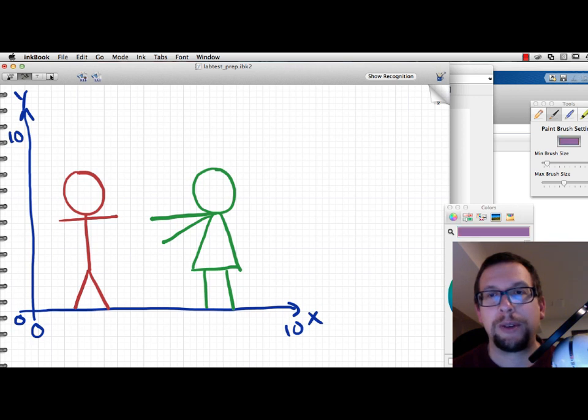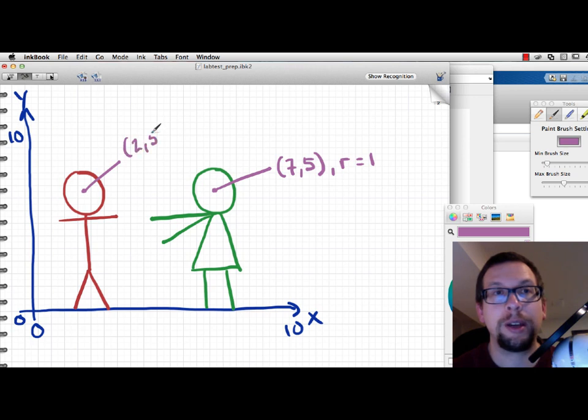Okay, so what we have to do now is illustrate what the different points are on here. So the center of this head right here is going to be at x equal to 7 and y is equal to 5, and the circle is going to have a radius of 1. The circle over here is going to be at 2 and 5 with a radius of 1.